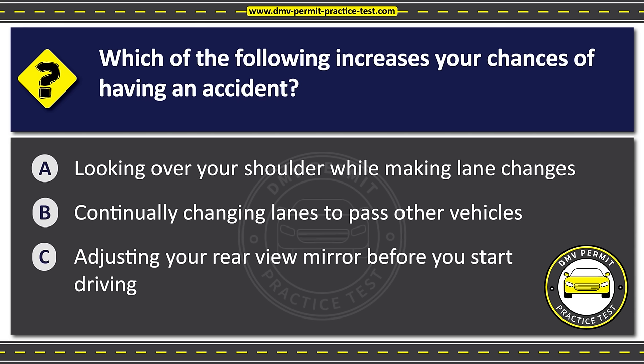Question thirty-four. If you have trouble seeing other vehicles because of dust or smoke blowing across the roadway, you should drive slower and turn on your Option A: High beam headlights. Option B: Parking lights. Option C: Low beam headlights. The correct answer is Option C: Low beam headlights.